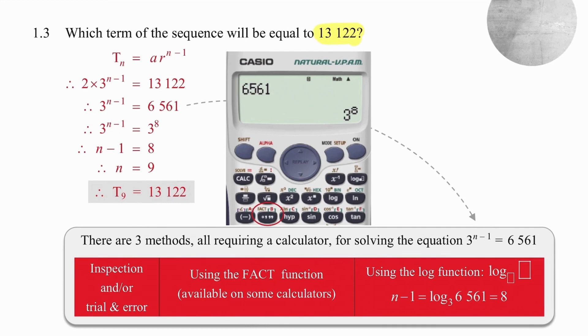Now we have the value of a term given and we need to work out the value of n, the position of the term. So we equate the general formula which we first have to work out. We know that the first term of the sequence is two. We have worked out that the ratio is three. So we can put that formula together very easily and we equate that to the outcome that we want. Dividing by two gives us the result of 6561. Now we need to be able to calculate the exponent that is needed and there are three methods.